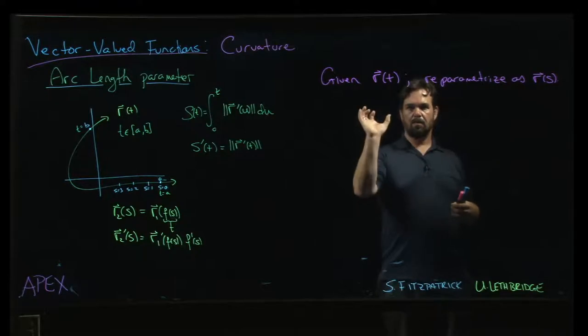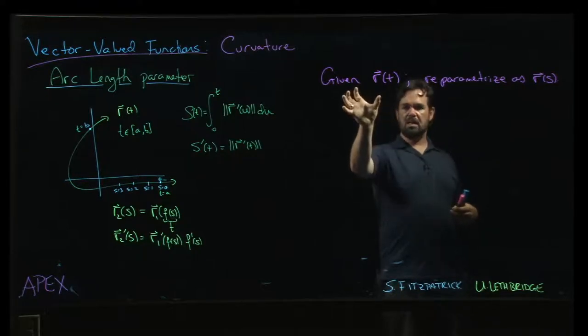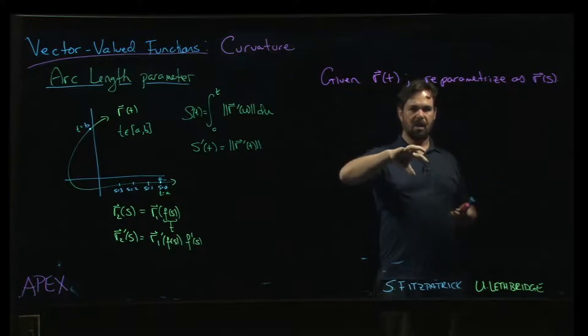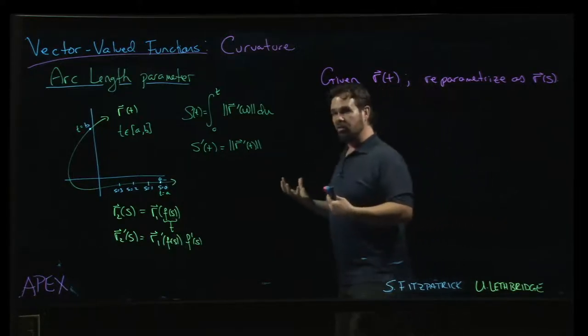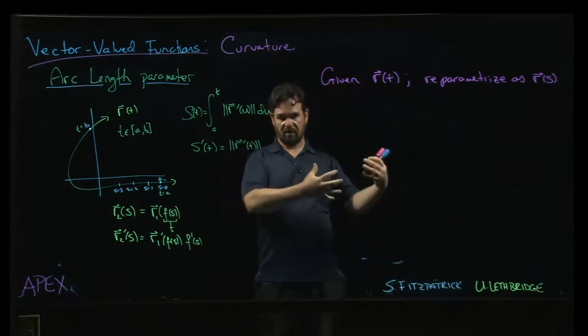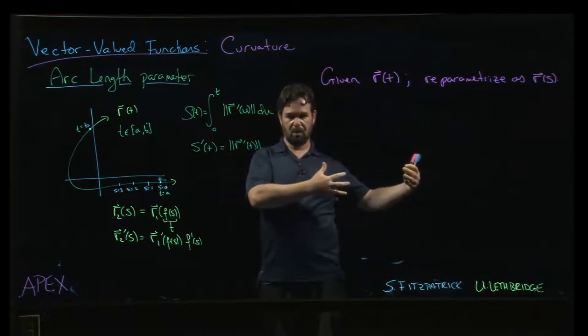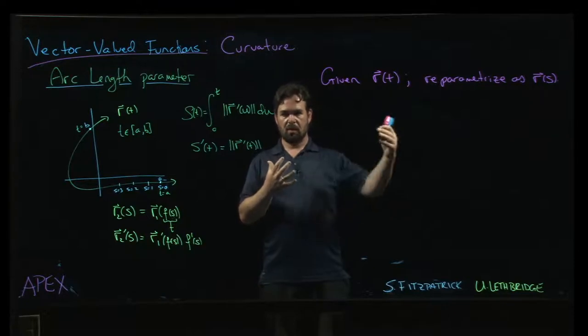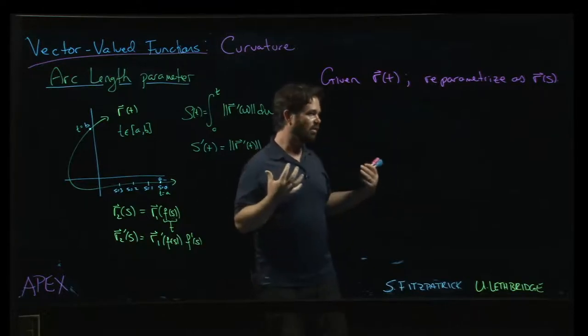And then we reparametrized, and now that t gets replaced with s over 5. So now you have 3 over 5 s minus 1. So it's a different function, because before you had 3, now you have 3 over 5. You've changed the function a bit.